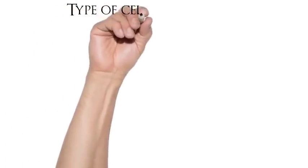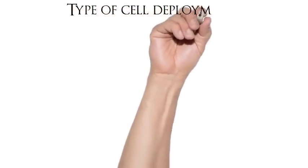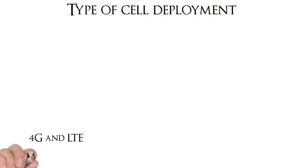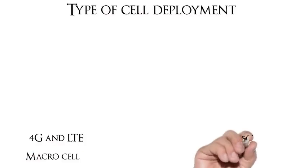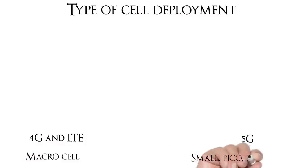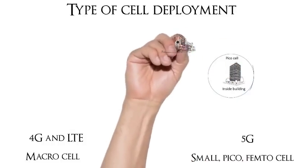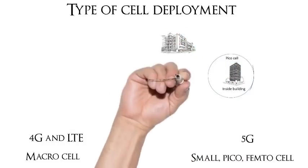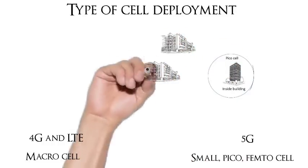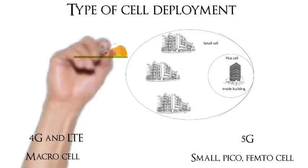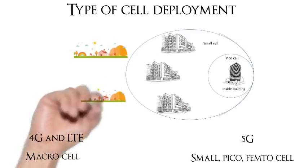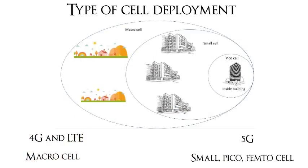Number 8: The type of cell deployment. For 4G and LTE, it's the macro cell. And for 5G, it's the small pico or femto cell. The pico cells are usually inside the building, the small cells are between the buildings, and connecting the suburban area are also the macro cells.